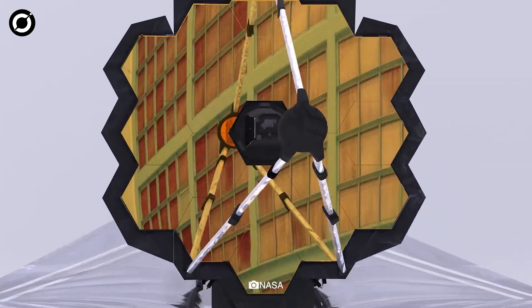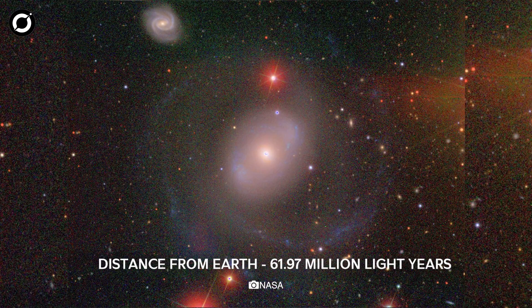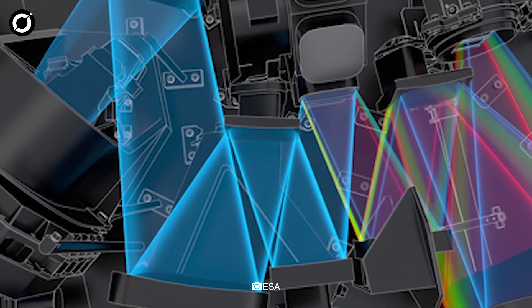However, even Webb's powerful instruments won't be able to track individual stars because the Eye of Sauron galaxy is very, very far away. Instead, its NIRSpec instrument will track blurred together groups of stars and their combined motions.